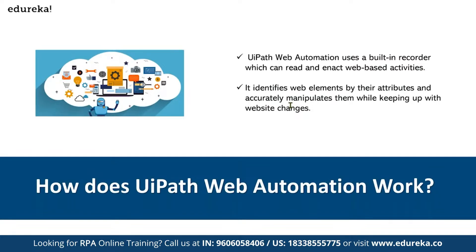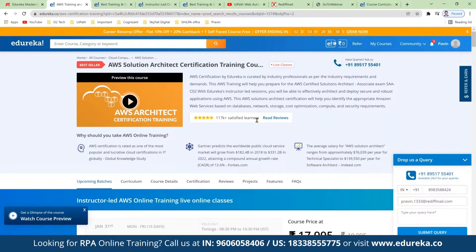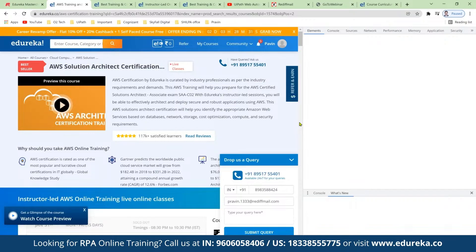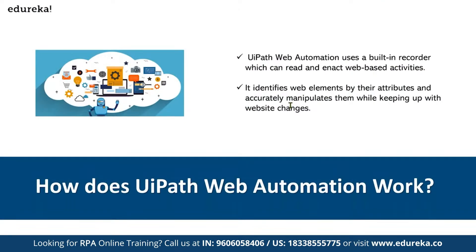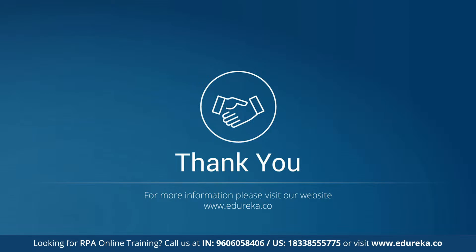How does UI automation work? UiPath uses a built-in recorder that can read and extract web activities. It identifies UI elements — such as buttons and labels — using their back-end code and control IDs. Using these identifiers, UiPath understands which element to interact with, whether to click a button or type into a field. That's a wrap for today — thank you so much!